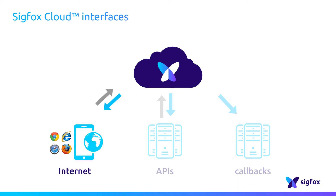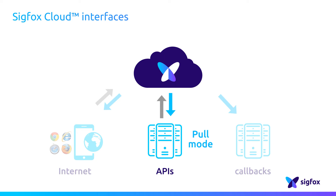The second interface with the Sigfox Cloud is the API, for computer interaction to do all the common tasks needed for service delivery. Everything accessible through the web portal can be done in a scriptable way using the API in pull mode. The API is perfect to integrate some of the Sigfox Cloud functions into a third-party platform.